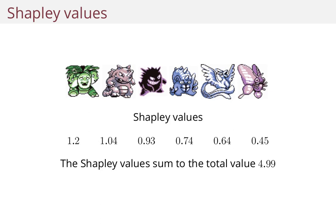So if you wanted to split the money prize among these Pokemon, the first one would have a claim to 1.2 over 4.99 of the money, using the Shapley value as a guide.